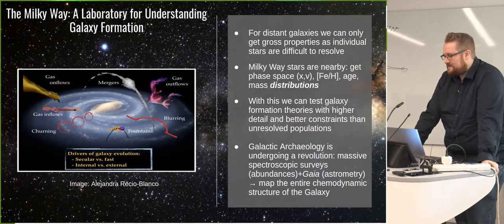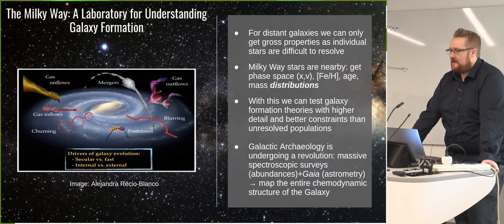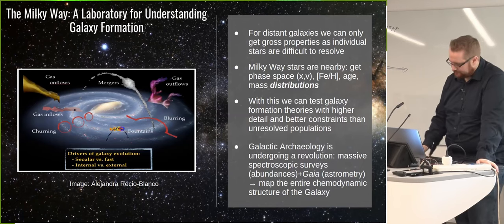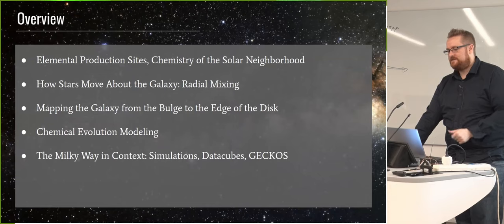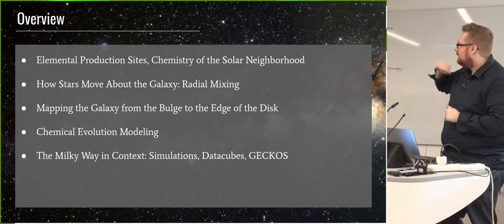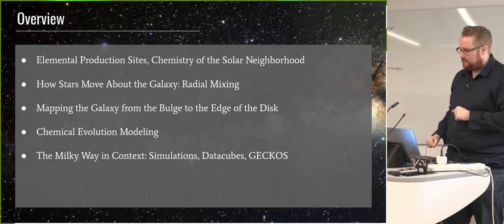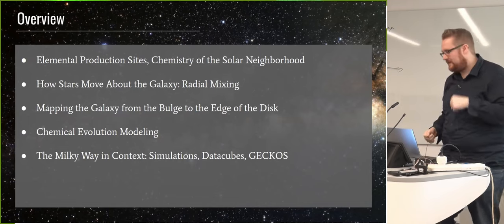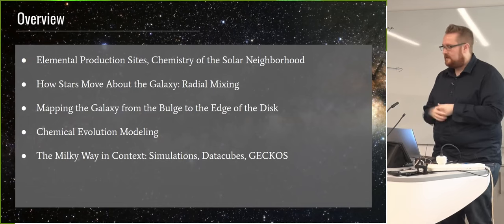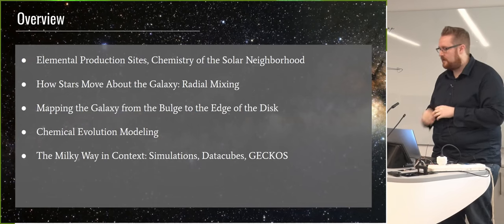It's really hard to understate how impactful Gaia has been. It provides proper motions and parallaxes for more than a billion stars across the galaxy. Since Gaia DR2 came out, there have been more than 5,000 papers using that data. You can really start to map the entire chemodynamic structure of the galaxy to a level we've never been able to do before. Today I'll talk about where elements come from, stellar chemistry around the sun, a crash course in galaxy dynamics, new maps of the galaxy, chemical evolution models, and comparing to simulations and surveys like GECKOS.